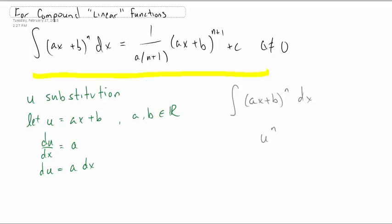And I have a relationship now. du is equal to a constant a times dx. So if I had an a here, good stuff, right?